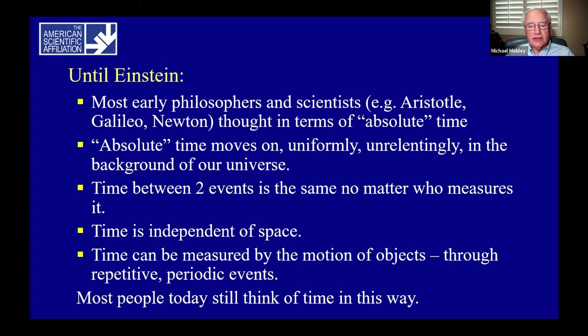The time between two events is the same, no matter who measures. Time is independent of space. Time can be measured by the motion of objects through repetitive, periodic events, such as the cycles of the moon or the solstice of the sun. Most people today still think of time in this way. As for 2,000 years, this concept of time has influenced how we interpret the Bible and many ideas about eternity.